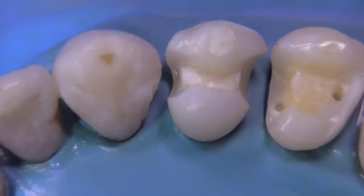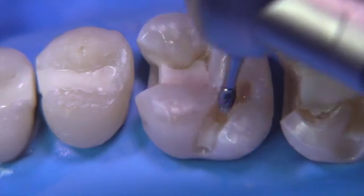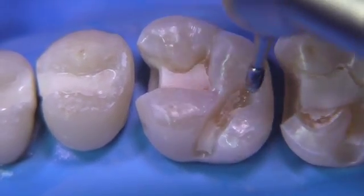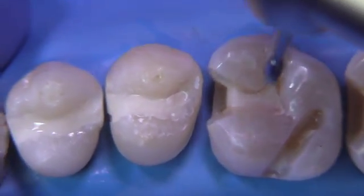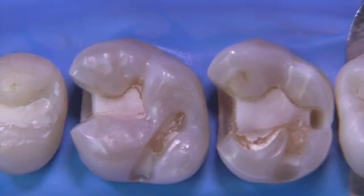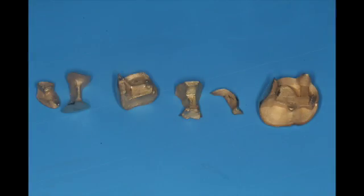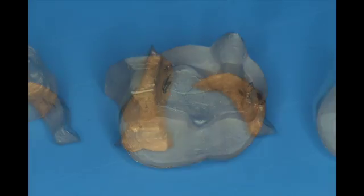On the molars we have a two-part casting on the first molar: an MO plus an DL tail sparing the oblique ridge, which is always really fun to do. Finally we have an AMO onlay utilizing a slot on the distal.